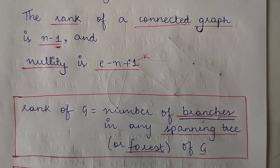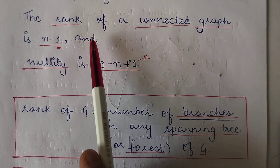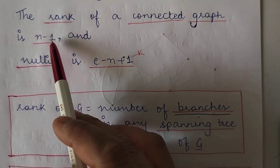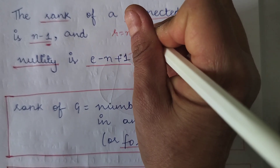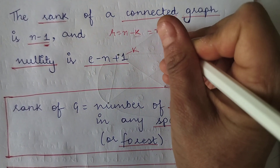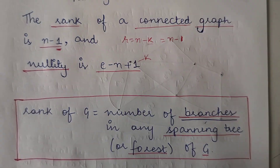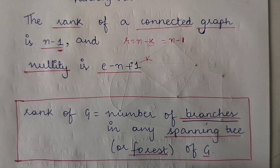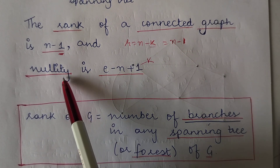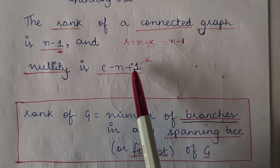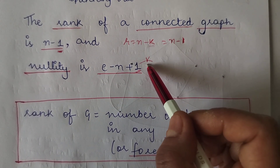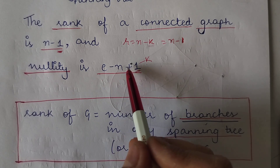If we talk of a connected graph, then the rank of a connected graph is N minus one. In general, the formula for rank is N minus K, but for a connected graph it will have only one component, so K equals one and the rank becomes N minus one. Similarly, the nullity in case of a connected graph will be E minus N plus one, where the one represents the single component of a connected graph.